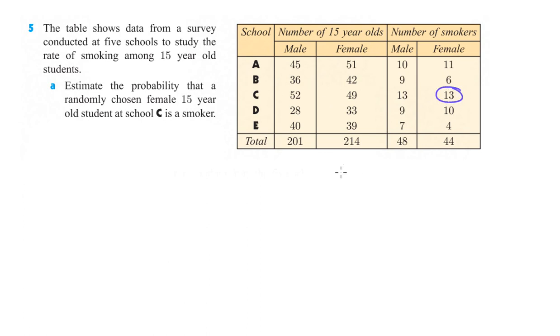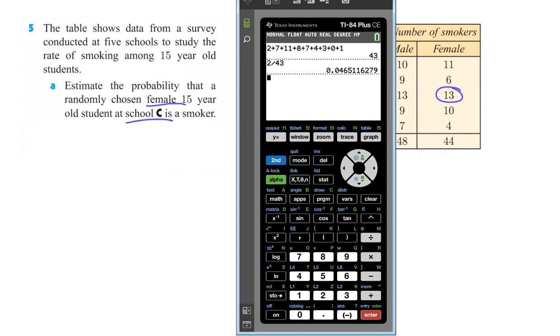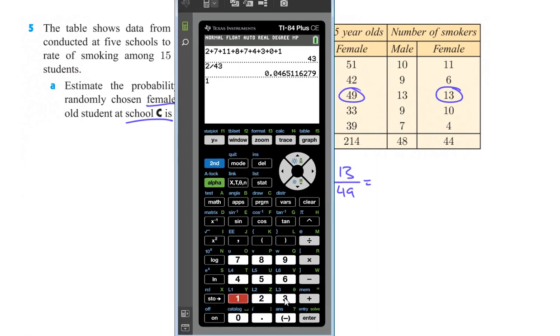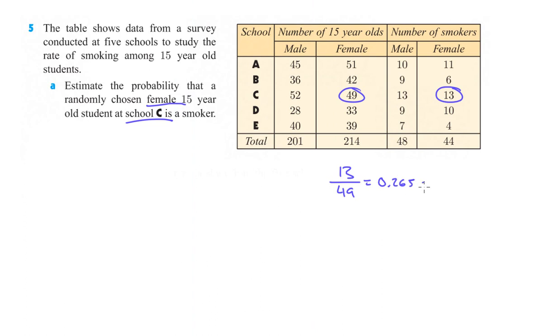We're just choosing the females at school C who are smokers. So we have 13 females at school C who are smokers. Now we've got to figure out how many total females there are at school C, right? So school C, number of 15 year old females, it should just be 13 out of 49. So we take 13 divided by 49 and we get 0.265 or 26.5%. Either one is fine.